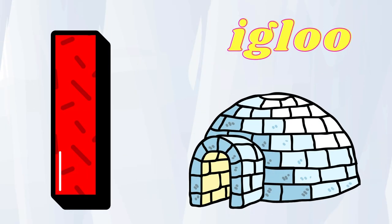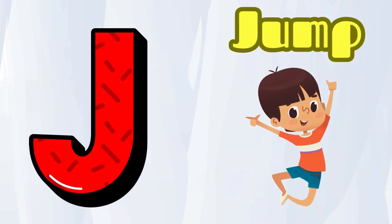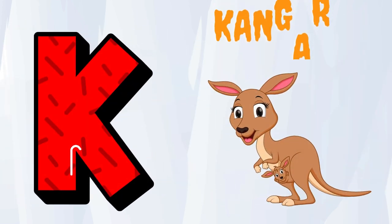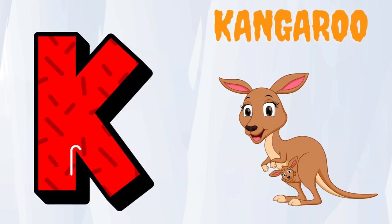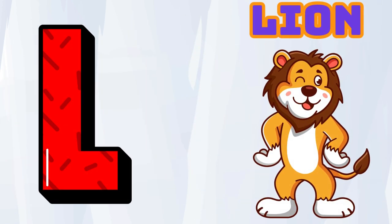I is for Igloo, I-I-Igloo. J is for Jump, J-J-Jump. K is for Kangaroo, K-K-Kangaroo. L is for Lion, L-L-Lion.